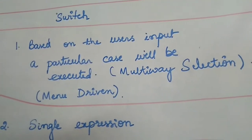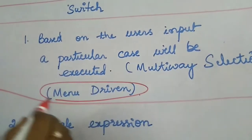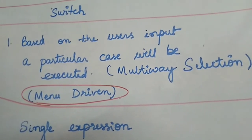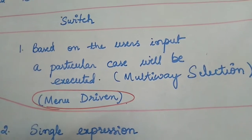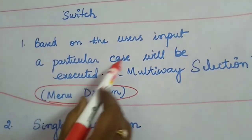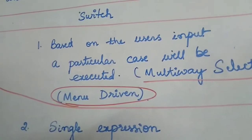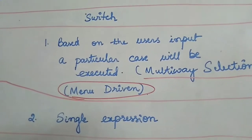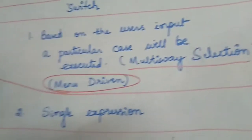Coming to switch, the input is based on the user's input because switch is generally used in menu-driven programs. The user is able to provide input and select cases. Based on the user's input, a particular case will be executed. Switch is called multi-way selection because for one expression there will be many cases to be evaluated, and whichever case is matched gets executed.